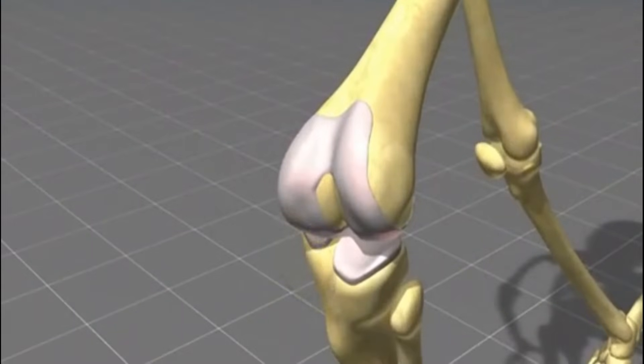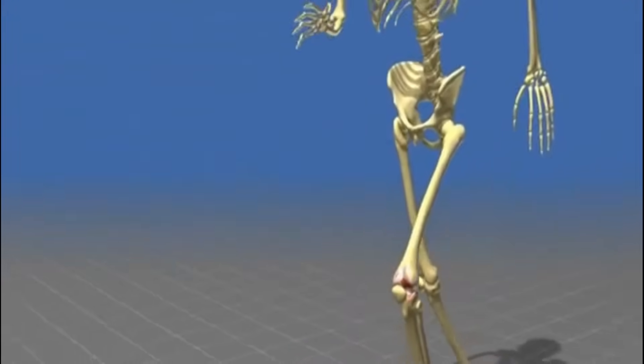The most important structure of the knee joint is its cartilage surface. Due to trauma, overload, and genetic disorders, the cartilage surface might be damaged.